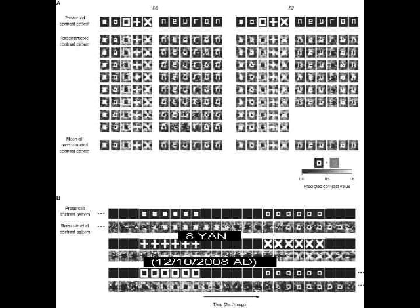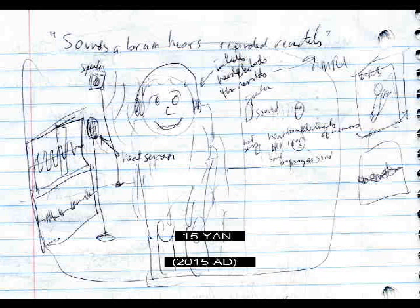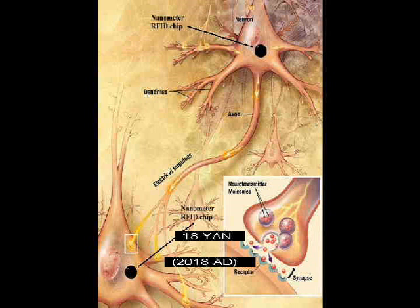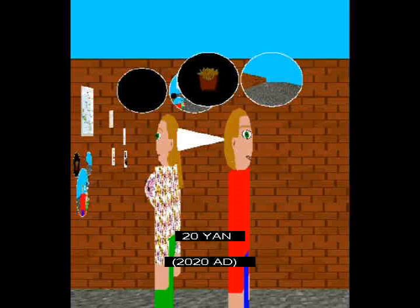Remote neuron reading. Image of what the eyes are seeing captured remotely. Sound a brain hears recorded remotely. Microscopic camera. Radio device functions as a cell organelle. Remote neuron writing using microscopic devices in neurons.